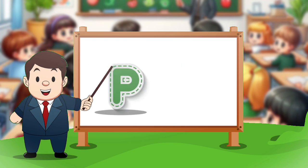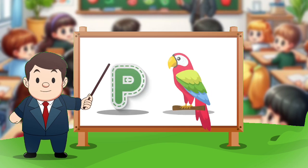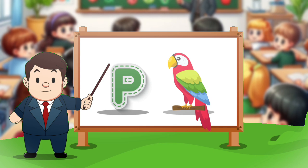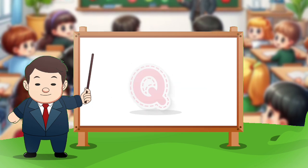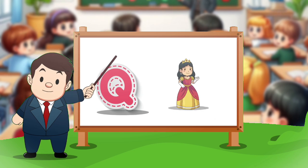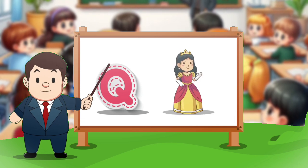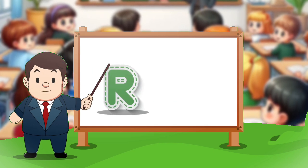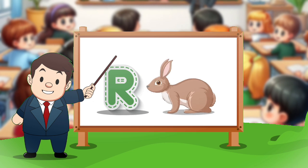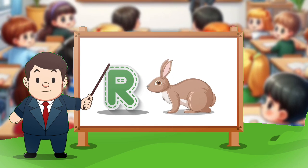P. P for parrot. Q. Q for queen. R. R for rabbit.